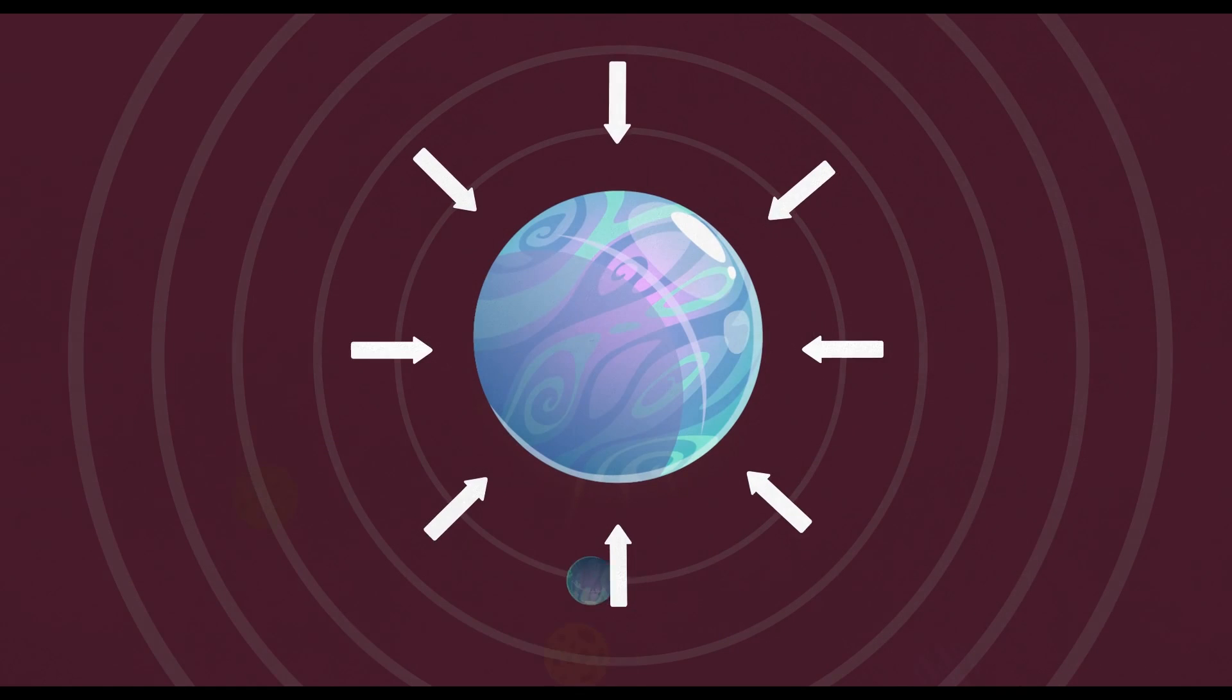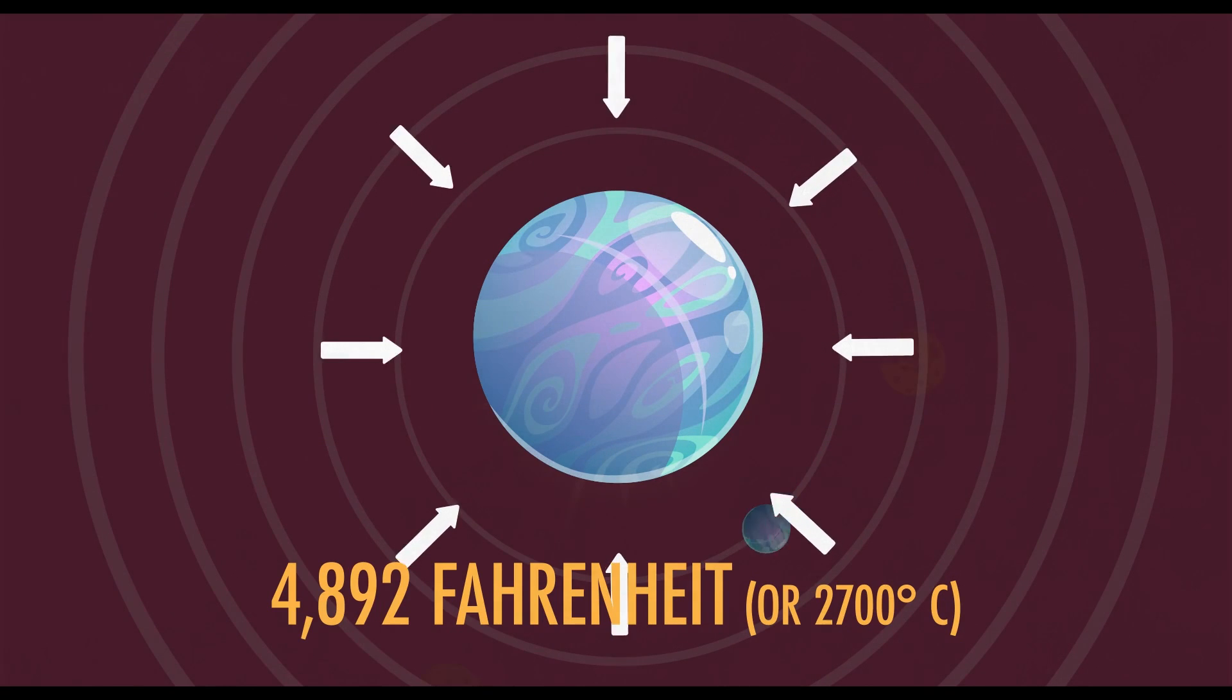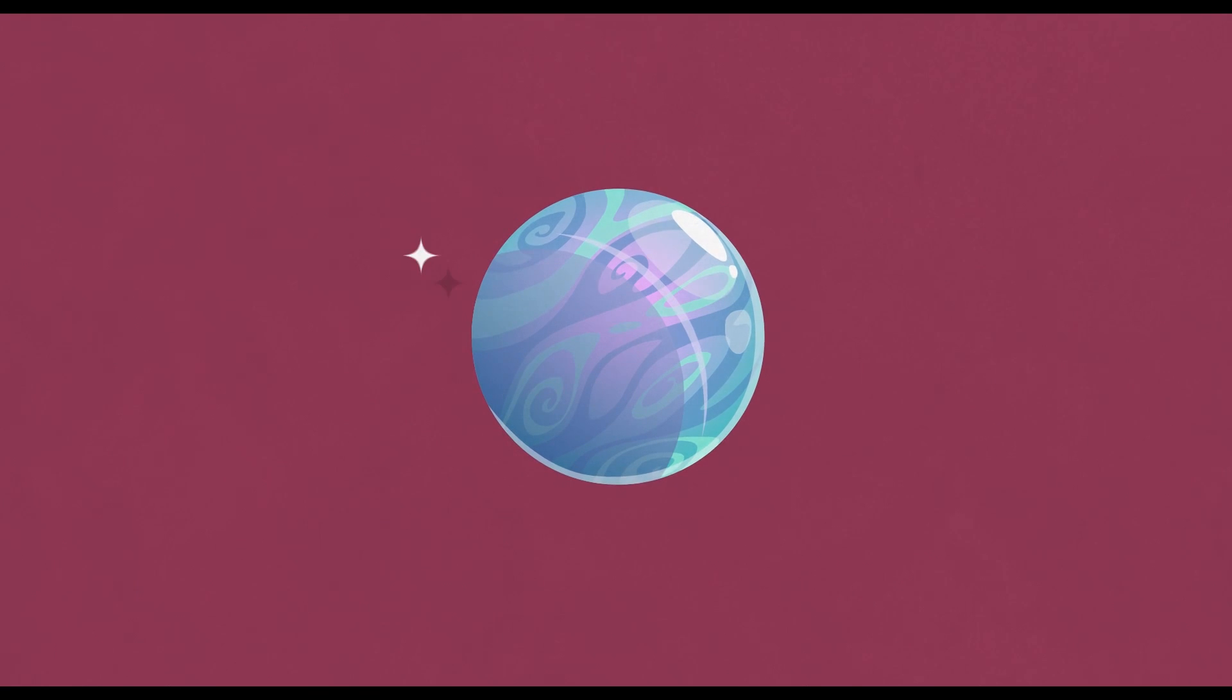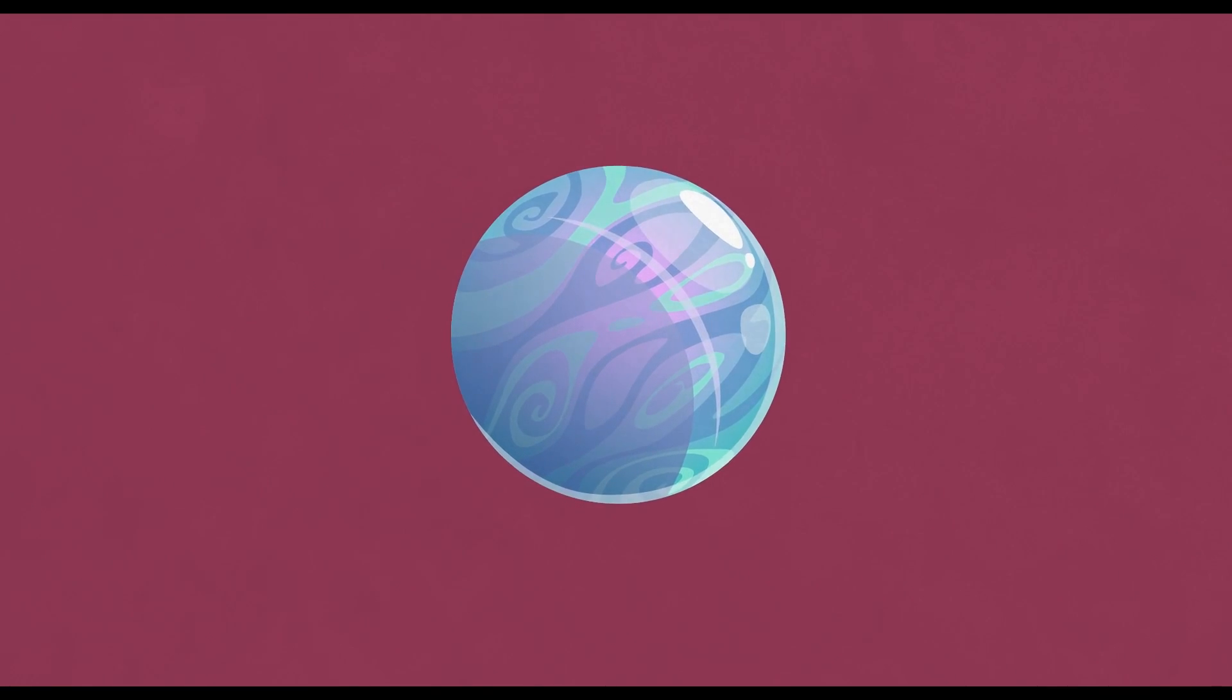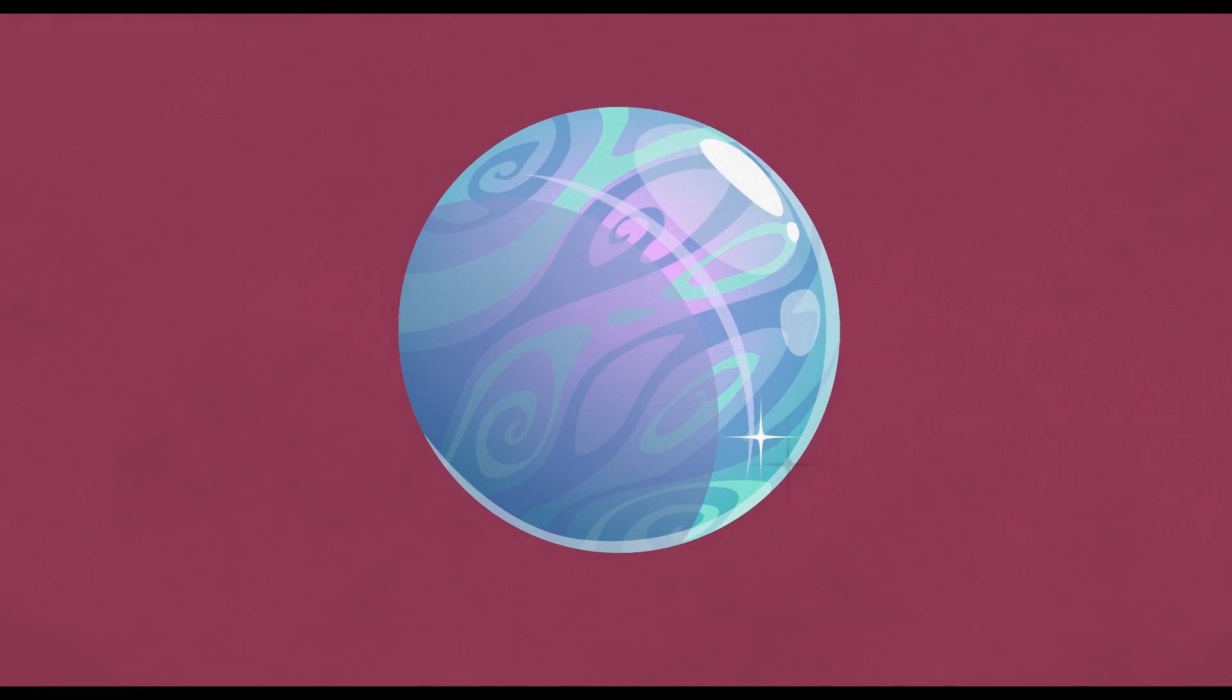This means that the gravitational pressures on the planet are immense and it's likely that surface temperatures can reach as high as 4892 degrees Fahrenheit, or 2700 degrees Celsius. Its position and composition means that this planet certainly has some unusual chemistry going on that makes it incredibly unique.